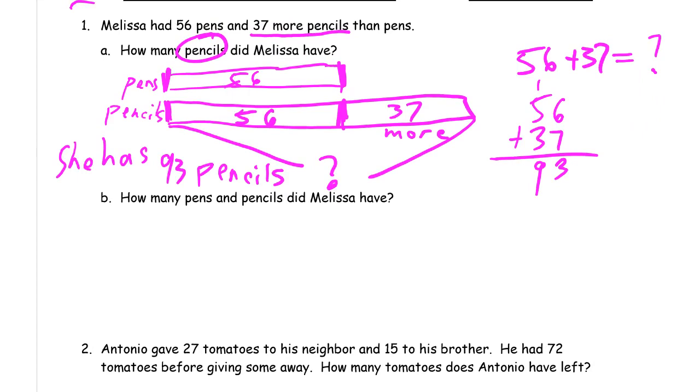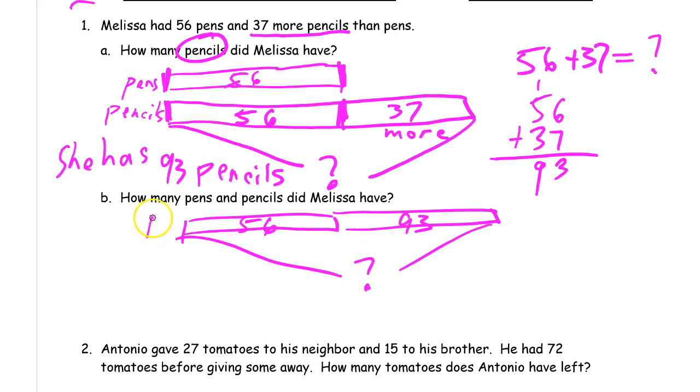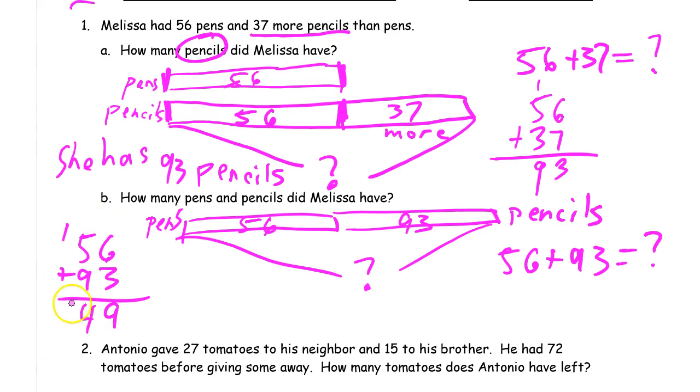How many pens and pencils did Melissa have? So here's the picture for that. Pens are 56. Pencils are 93. 56 plus 93. 56 plus 93 equals, we'll find out. 56, 93. 6 plus 3 is 9. Nine ones. And then 5 plus 9 is 14. That's 14 tens, which is 140. So we have 149. She has 149 pens and pencils.